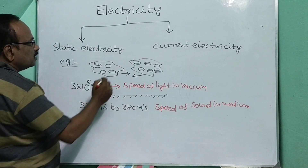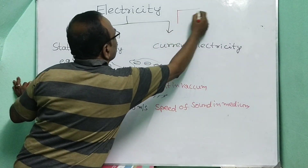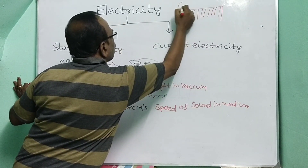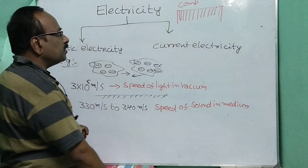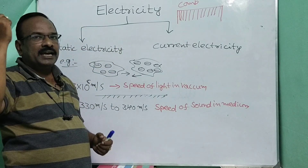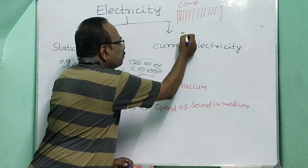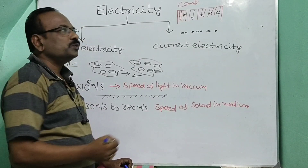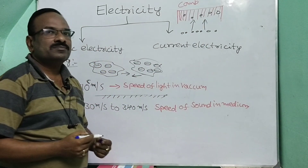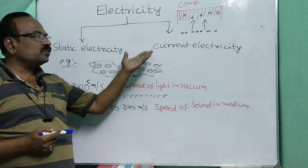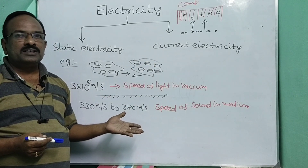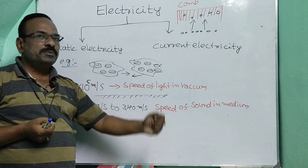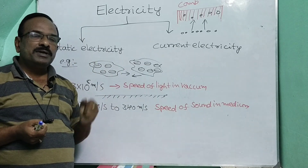Another best example of static electricity: you can observe a comb. After moving the comb around your hair, you keep small pieces of paper near it — these papers will be attracted by the comb. This attraction is due to static electricity, and that force is called electrostatic force.